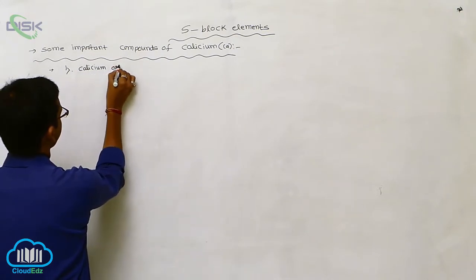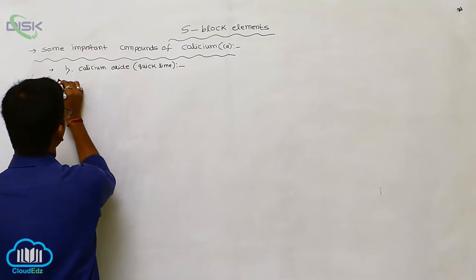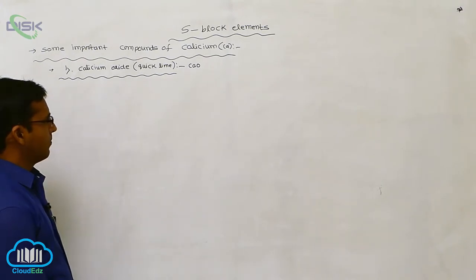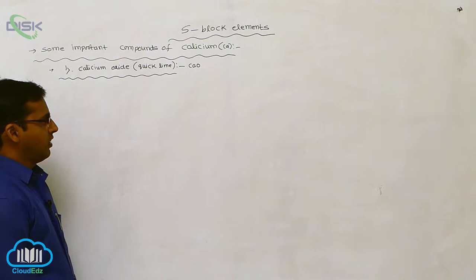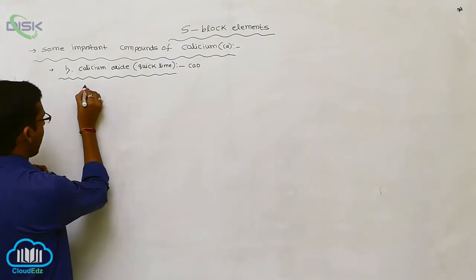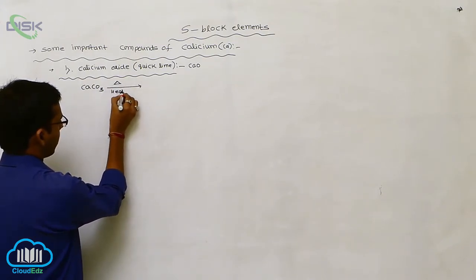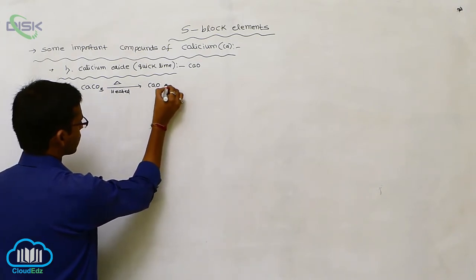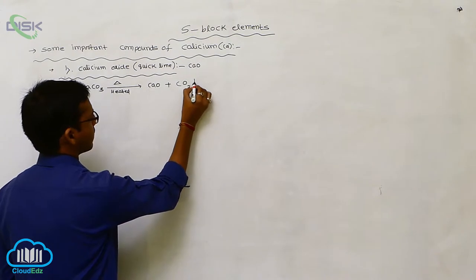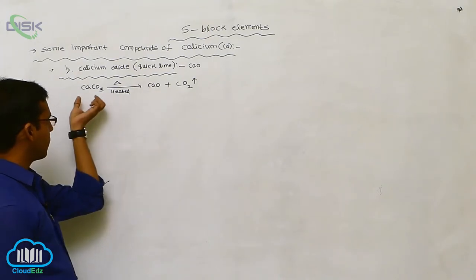The first compound is calcium oxide, also known as quick lime. Calcium oxide (CaO) is generally called quick lime. It is prepared by the following reaction: when calcium carbonate (CaCO₃) is heated at a higher temperature, it produces calcium oxide plus carbon dioxide gas, which is liberated.